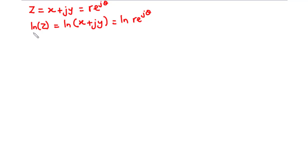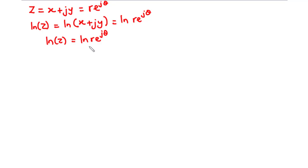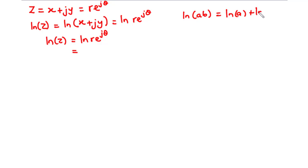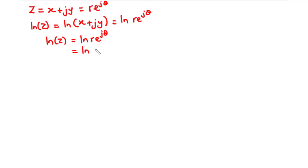Let's focus on ln z and ln(r times e exponent j theta). Now let's simplify. We notice that r and e exponent j theta are products. We know that the logarithm of a product equals the sum of the logarithms of the factors. So if we have ln(a times b), that equals ln a plus ln b. We are going to apply this property here, giving us ln r plus ln(e exponent j theta).